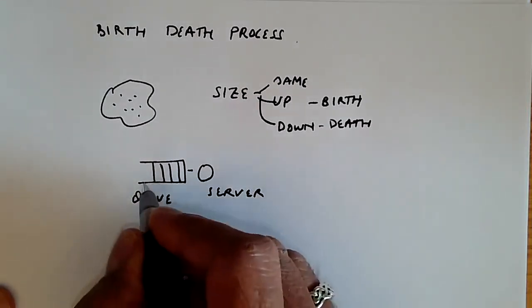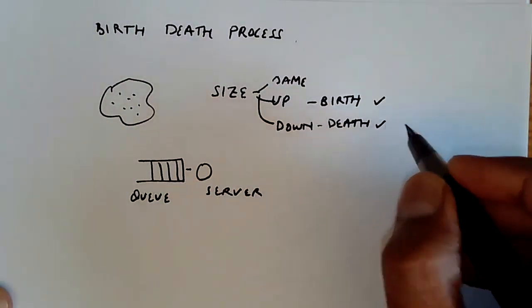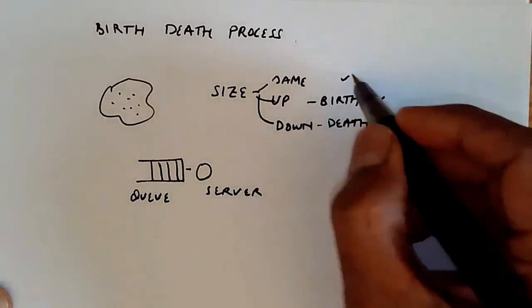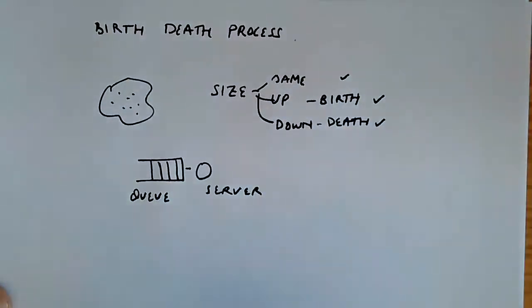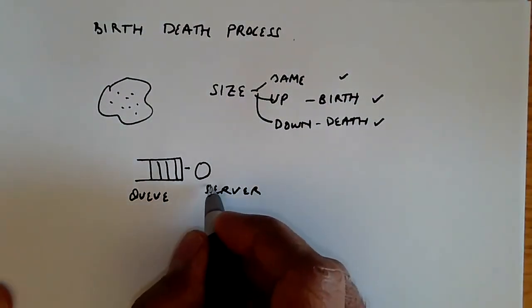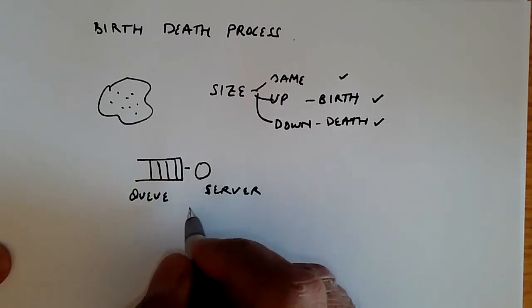Each time a packet arrives, it corresponds to a birth. Each time a packet gets served, it corresponds to a death. And of course, if neither a packet arrives or is served, then it stays the same. Birth-death process is very much the right model for packet arrivals into a network server.